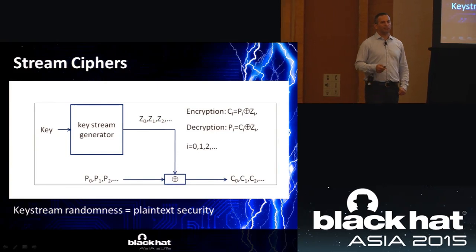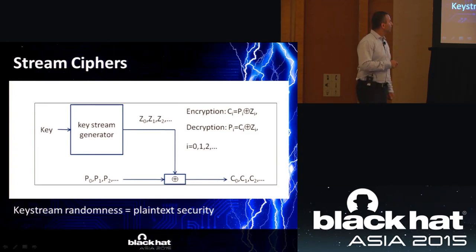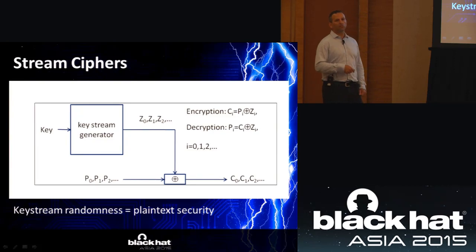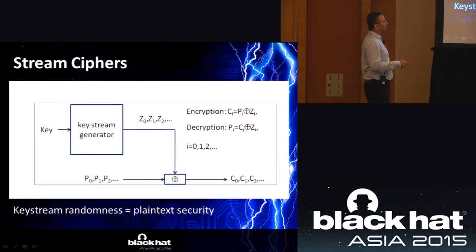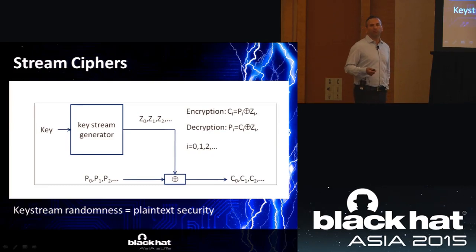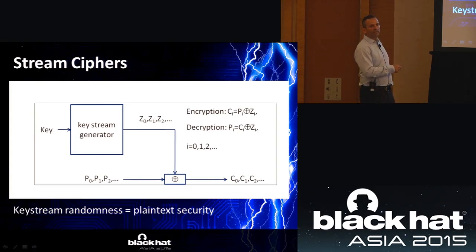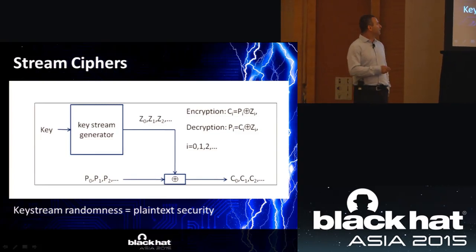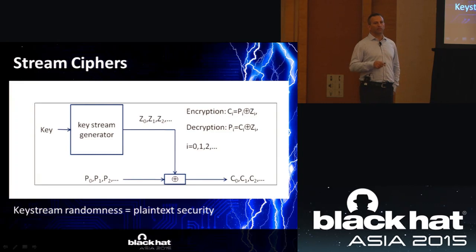RC4 is a stream cipher. The way stream ciphers work is there is an algorithm called a key stream generator, which takes a key and generates a random key stream from it. This key stream is then XORed with the plaintext to produce the ciphertext. The XOR operation has very useful cryptographic attributes — if the key stream is completely random or pseudorandom, it provides maximum security. If it is not random, it does not provide security. This is more or less the problem with RC4.